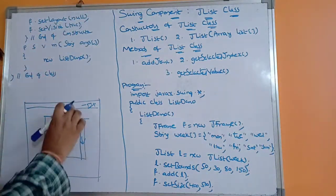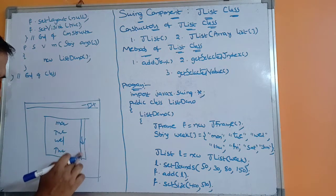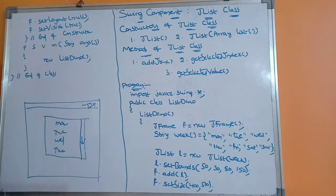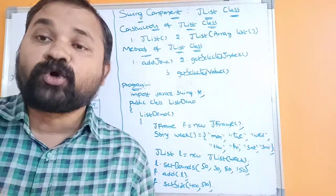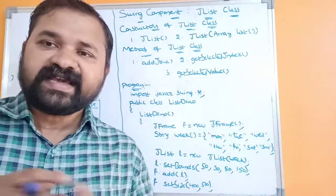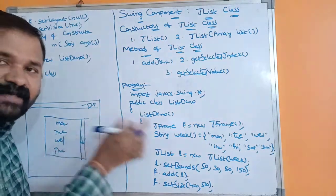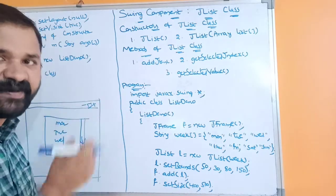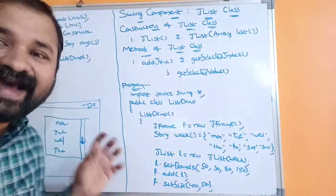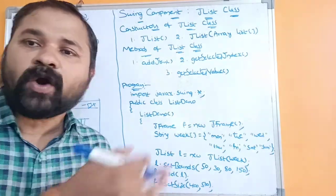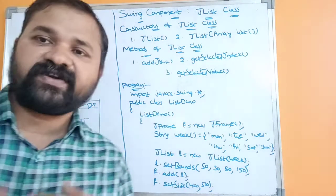If the height of the list can accommodate only four items, then we will get a scroll bar. With the help of this scroll bar we can scroll down and see the remaining items. The scroll bar will appear only if the list cannot accommodate all the items. If the height is sufficient for all seven items, then no scroll bar will appear.